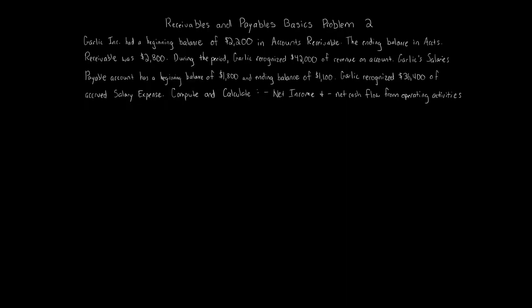Receivables and Payables Basics Problem 2. Garlic, Inc. had a beginning balance of $2,200 in accounts receivable. The ending balance in accounts receivable is $2,800. During the period, Garlic recognized $42,000 of revenue on account. Garlic's Salaries Payable account has a beginning balance of $1,800 and ending balance of $1,100. Garlic recognized $36,400 of accrued salary expense. Compute and calculate net income and net cash flow from operating activities.